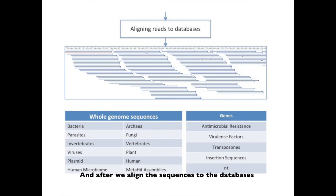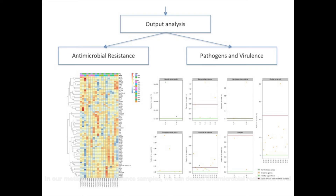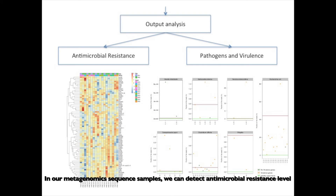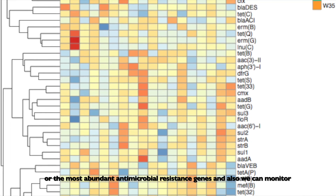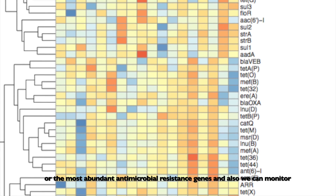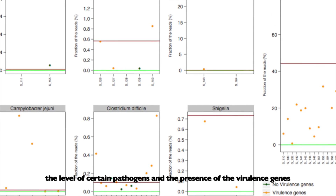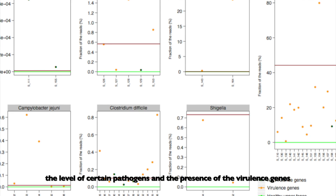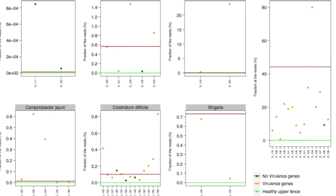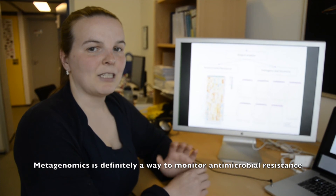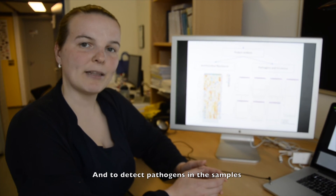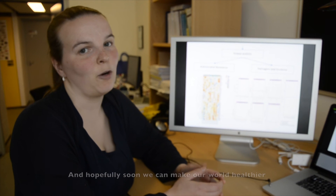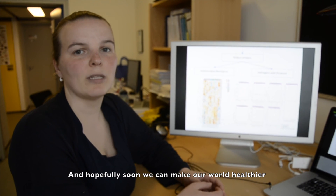After aligning sequences to the databases, from our metagenomic sequence samples we can detect antimicrobial resistance levels and the most abundant antimicrobial resistant genes, and also monitor the level of certain pathogens and the presence of virulence genes. Metagenomics is definitely a way to monitor antimicrobial resistance and detect pathogens in samples, and hopefully soon we can make our world healthier.